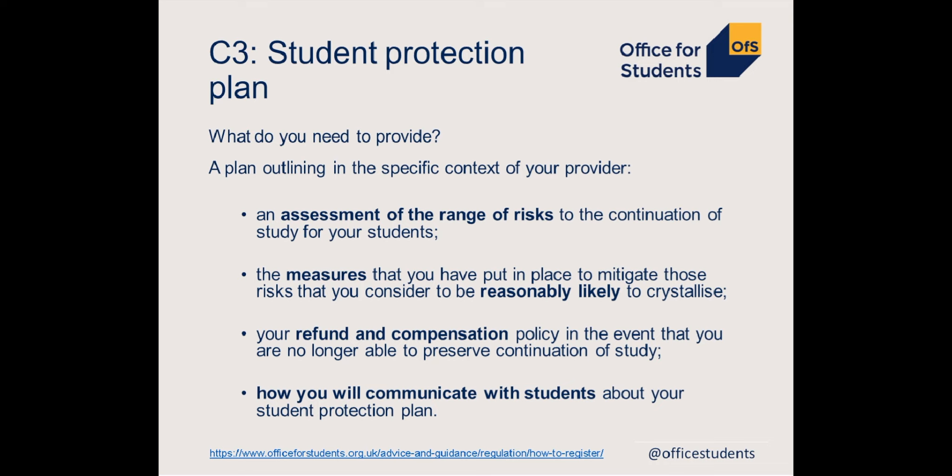The final condition before our question break is C3, the Student Protection Plan. This is a requirement to have a Student Protection Plan approved by the Office for Students and, once approved, published on your website. All providers must submit a plan that addresses: an assessment of the range of risks to the continuation of study for your students, including how these risks may differ based on students' needs, characteristics and circumstances, and the likelihood that these risks will crystallise; the measures you have put in place to mitigate those risks considered reasonably likely to crystallise; information about policies to refund tuition fees and provide compensation where you are no longer able to preserve continuation of study; and how you will communicate with students about your student protection plan.